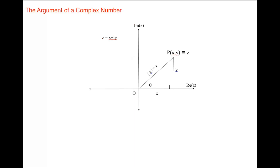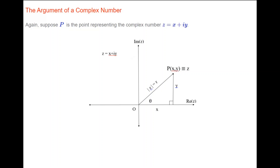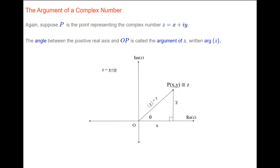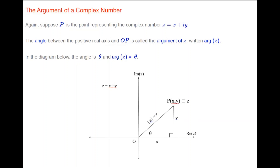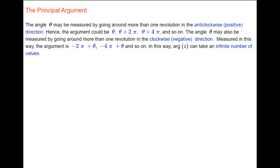Now consider the argument of a complex number. Suppose P is the point representing Z equals X plus iY. The angle between the positive real axis and the interval OP is called the argument of Z, written arg(Z). In the diagram, that angle is theta, so the argument of Z is theta. The angle theta may be measured going more than one revolution anticlockwise — giving theta, theta plus 2π, theta plus 4π, and so on — or clockwise, giving minus 2π plus theta, minus 4π plus theta, and so on. Thus the argument of Z can take an infinite number of values.